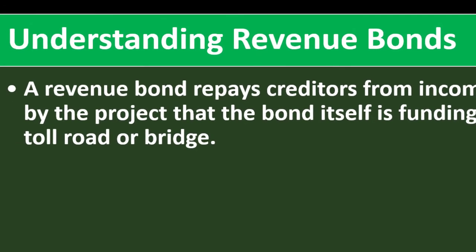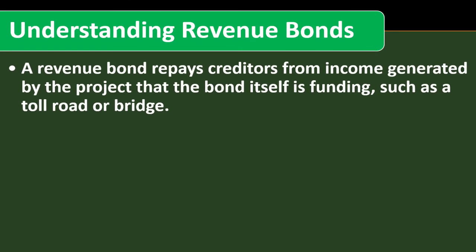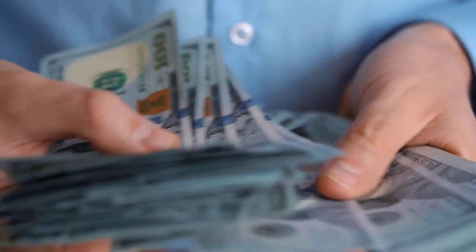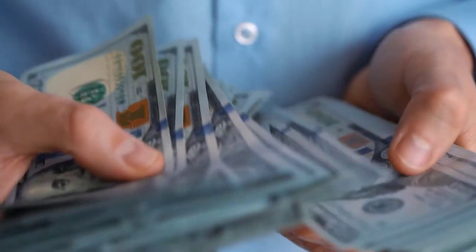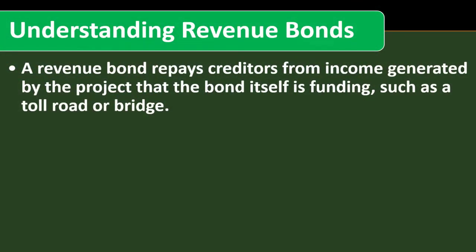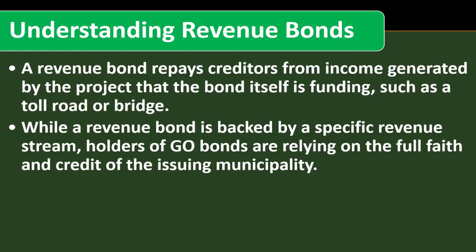A revenue bond repays creditors from income generated by the project that the bond itself is funding — you're giving money to fund a specific project, such as a toll road or bridge, rather than a general fund. While a revenue bond is backed by a specific revenue stream, holders of GO bonds are relying on the full faith and credit of the issuing municipality.